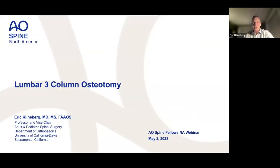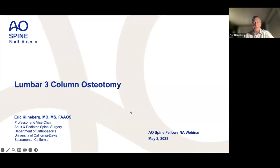Good evening, everybody. This is part of the AO Spine webinar series. I appreciate you tuning in to join us this evening. We're going to talk about lumbar three-column osteotomies — some tips and tricks of the trade and how we can do deformity correction on these large cases in a safe and reliable way. My name is Eric Kleinberg. I'm the professor and vice chair at University of California Davis, and I'll be moving in just a few months to the University of Texas in Houston.